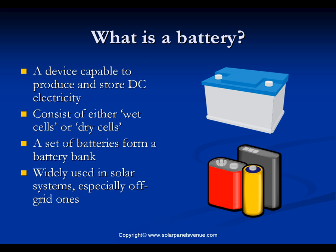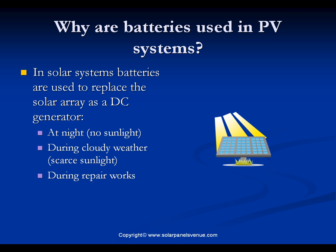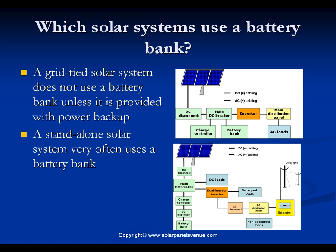Battery banks are widely used in solar electric systems, especially in off-grid ones, to store the solar-generated electricity. In photovoltaic systems, batteries are used to replace the photovoltaic generator at night, during cloudy weather, or when the solar array is disconnected for repair and maintenance works.